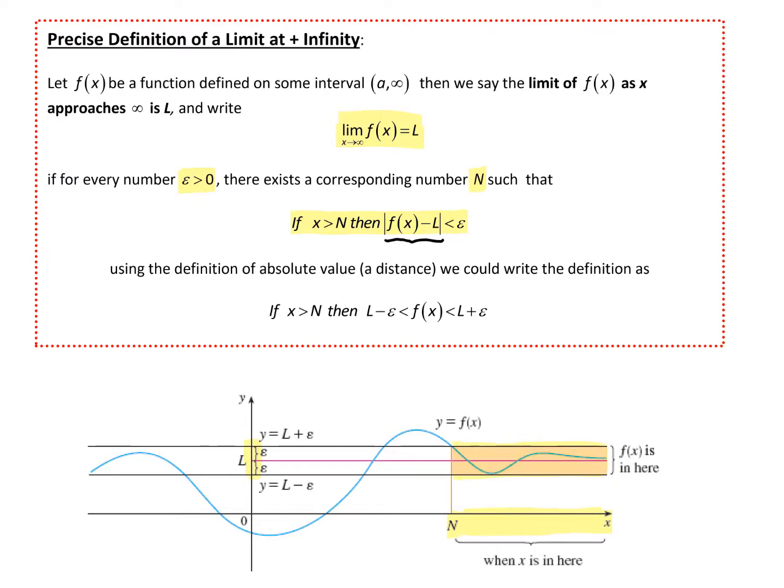Epsilon can get as small as we want it to, and we can still find a value N. As long as the x's are past that — greater than N — then our f(x) values will be within an epsilon of the limit value.